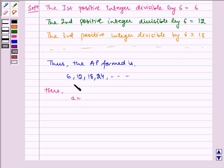Here we see that a is equal to 6, d is equal to 12 minus 6 which is equal to 6, and n is equal to 40.